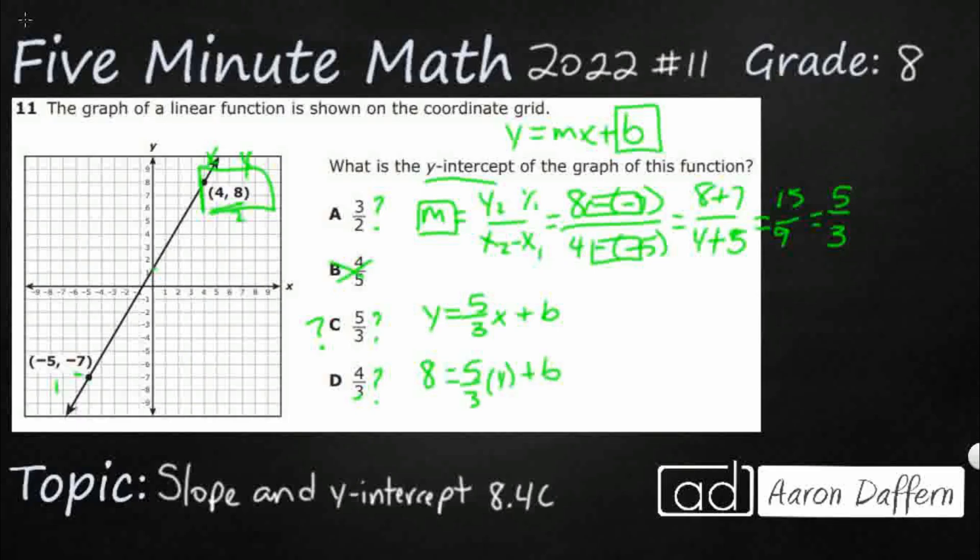So look at that. I got everything I need. I just need to simplify here. So this is going to be 8 equals, okay, 5. That's going to be 20 over 3 plus b.